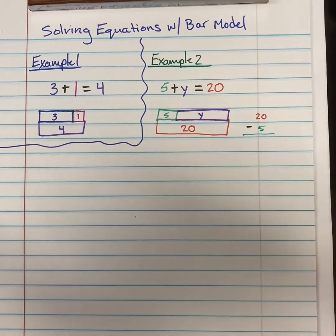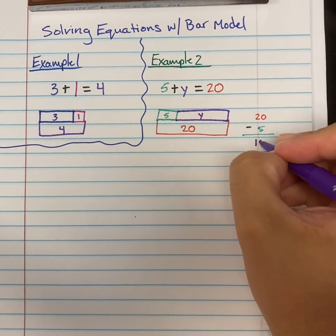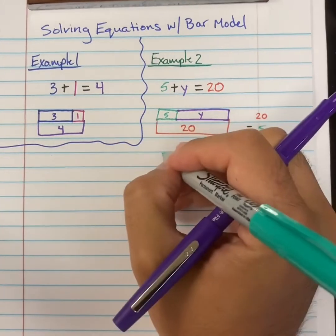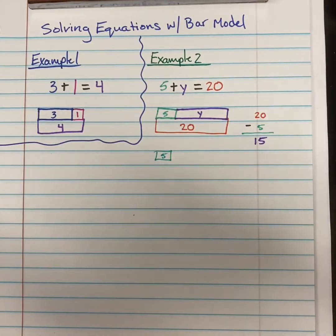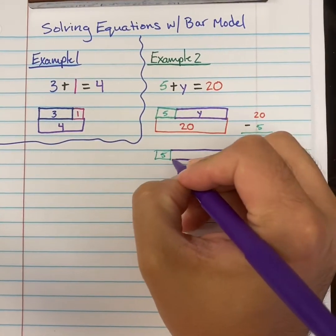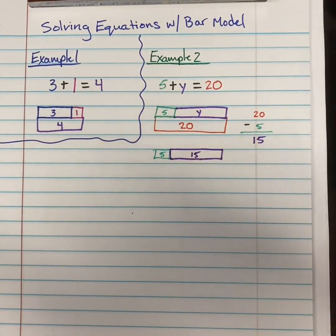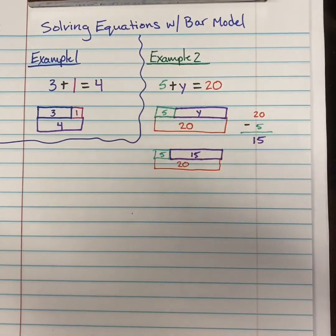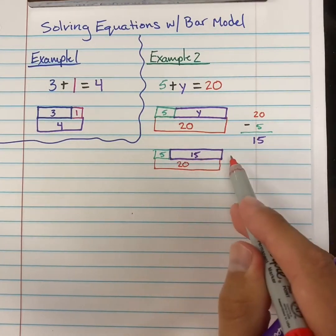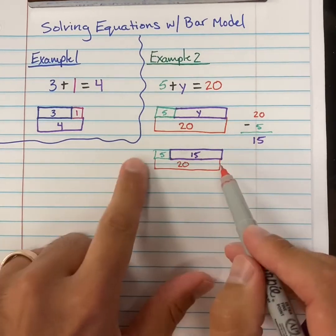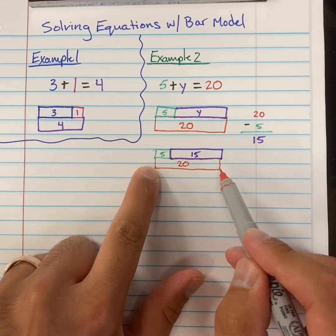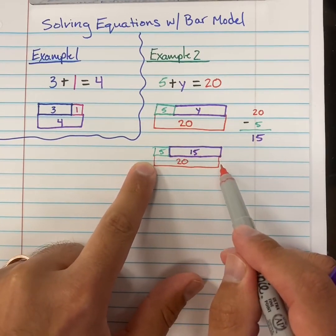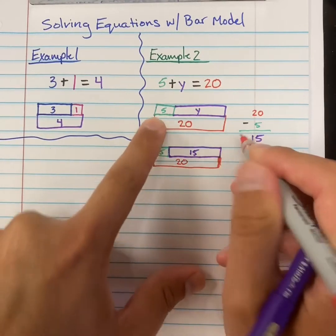And this would give us an answer — our y value — which is going to be 15. So if we were to redraw this, we could do 5 plus our new y, which we said should be 15. And if we add that all together, do we get 20? The answer is absolutely yes. If you add 5 and 15, you would have 20. 20 is equal to 20. The bar model is always equal to one another vertically, so 20 is the same length as that 5 plus 15, or that 5 plus y.